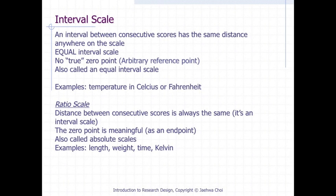The ratio scale also assumes the distance between consecutive scores is always the same, as the interval scale does. However, the zero point is meaningful as an endpoint. Examples of this measurement scale include length, weight, time, or temperature in Kelvin.